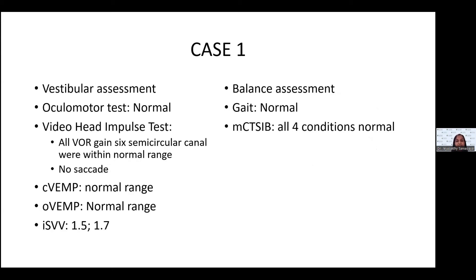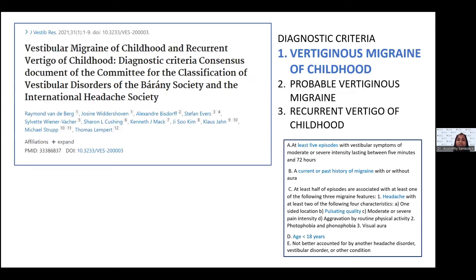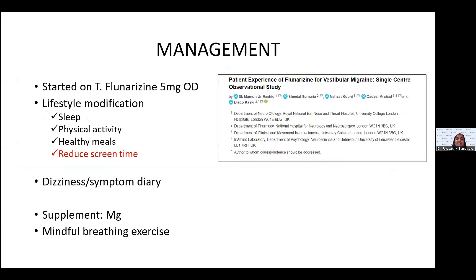I performed a thorough vestibular and balance assessment, which was also within normal range. Based on this child's symptoms and findings, he was diagnosed with vertiginous migraine of childhood. His symptoms fulfill the diagnostic criteria published in 2021 by the Barany Consensus Group. Besides his positive symptoms, the presence of motion sickness and a first-degree relative with migraine further point towards vertiginous migraine. I started this child on flunarizine as a calcium channel blocker. There has been many papers published on good outcomes of flunarizine both to treat and prevent recurrence, and I have seen very good outcomes among the children I started on flunarizine.